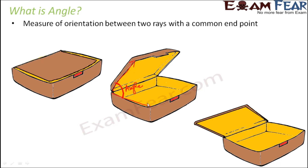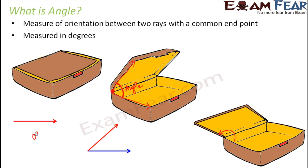This is one ray, this is another ray, and this orientation is the angle. Both of these rays have a common endpoint. As the box is totally opened, the angle increases all the more. Basically, angle is a measurement in degrees which tells us how much is the orientation between two rays. In the first scenario, both rays are lying along each other, so the angle is zero degrees. In the second case, there is some orientation — let's say 60 degrees. In the third case it has opened more, so the angle increased to maybe 120 degrees. As the box gradually opens, the angle also increases.